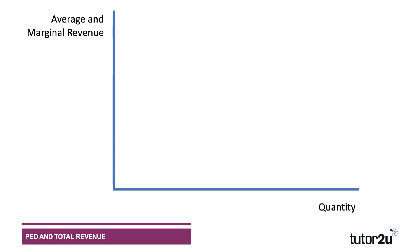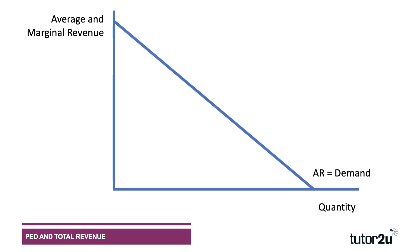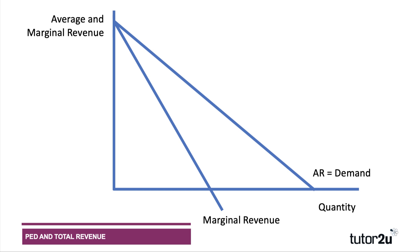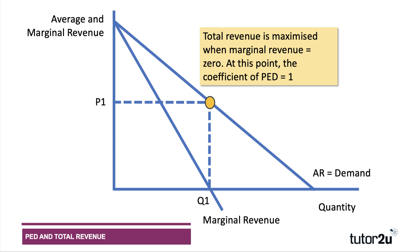For Theme 3 revision, think about average revenue (AR) and marginal revenue (MR). The MR curve has twice the gradient of the AR curve and cuts the x-axis at halfway from where AR cuts it. Marginal revenue is the change in total revenue from selling an extra unit. When marginal revenue is zero, we maximize total revenue at P1, Q1 — and at that point the coefficient of elasticity equals one.